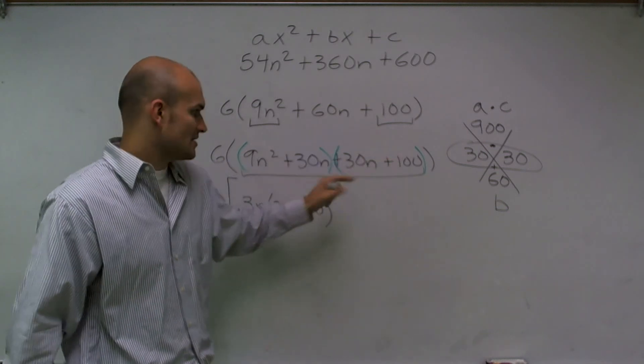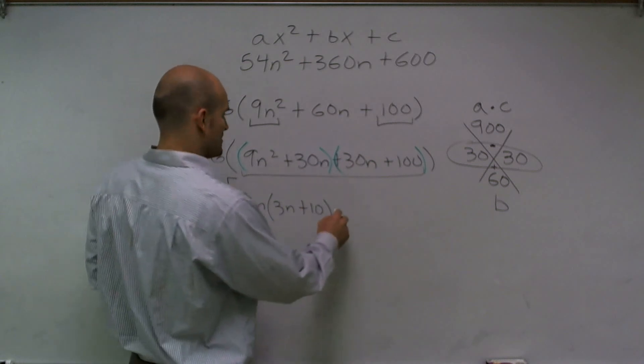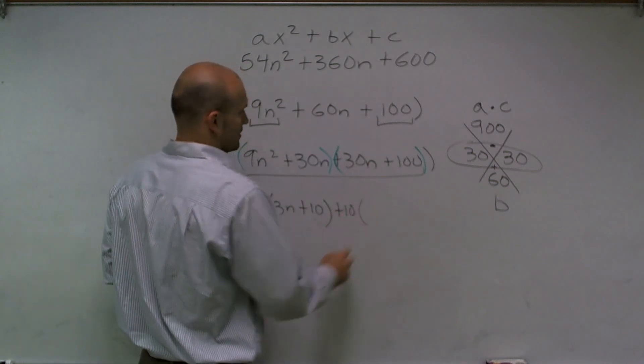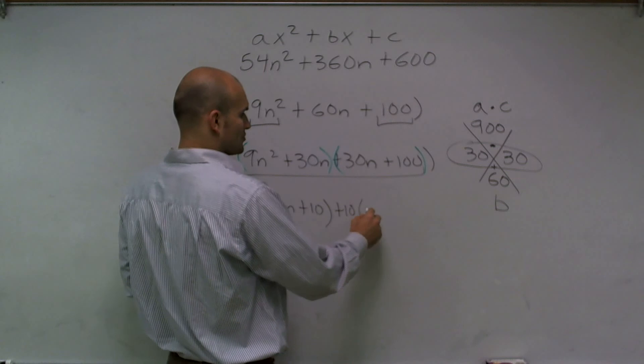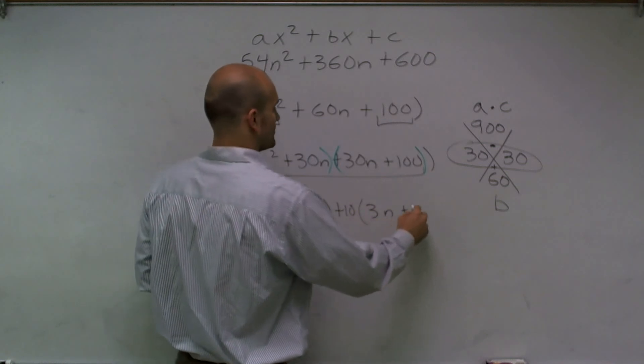Here, what can I factor out? Well I can factor out a positive 10. And then what I'm left over with is going to be again a 3n plus 10.